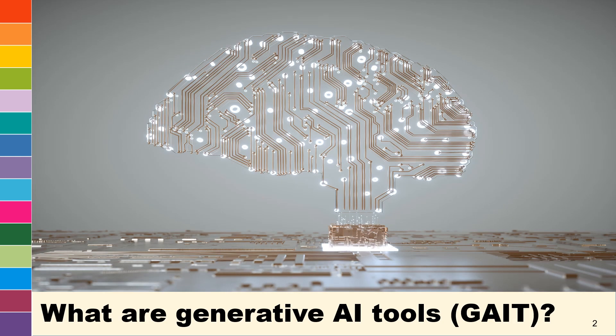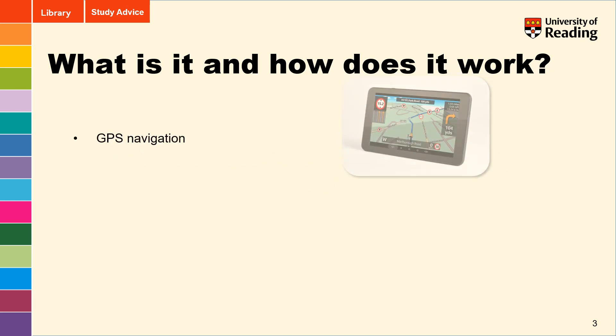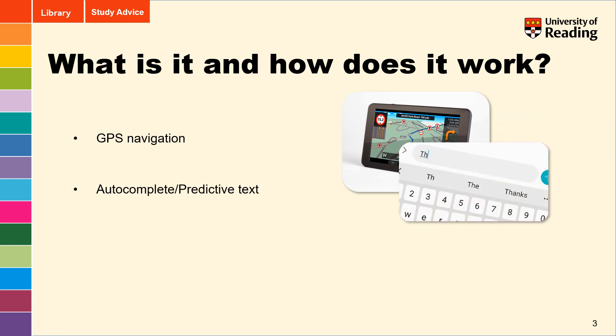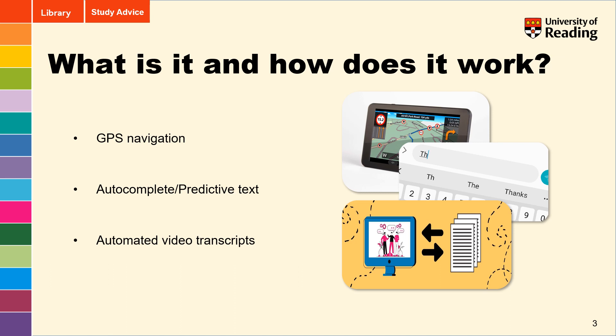Generative AI tools, or GATs, are rapidly becoming a household technology with their use on the increase in domestic, business, and academic settings. But what exactly are GATs and how do they work? Well, they've actually been around for a lot longer than you may have first thought. Common technologies such as GPS navigation systems, autocomplete or predictive text, and automated video transcripts all use variants of current generative AI technology.